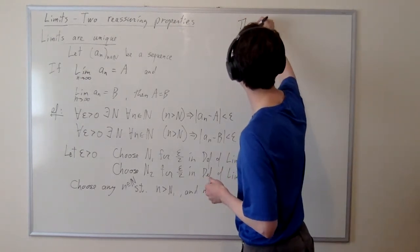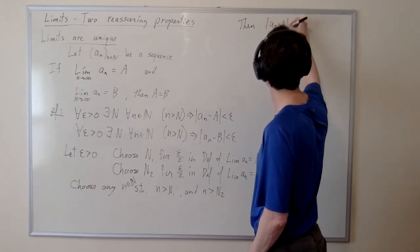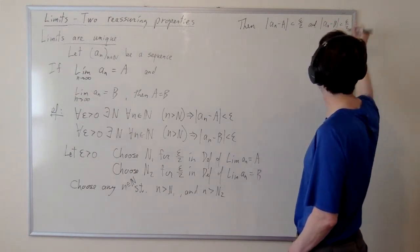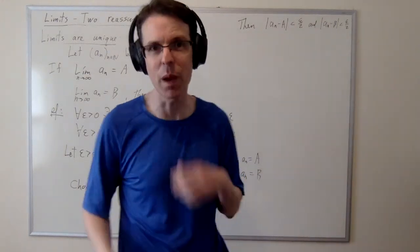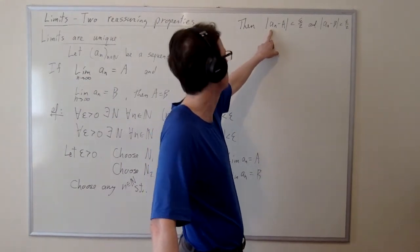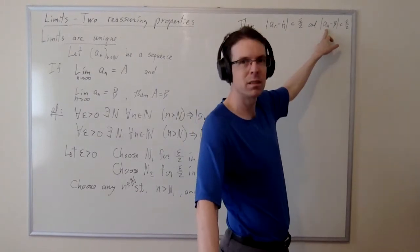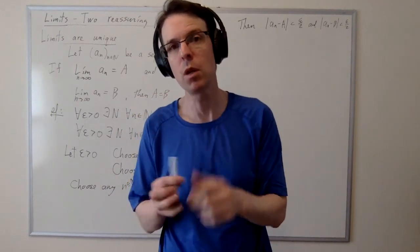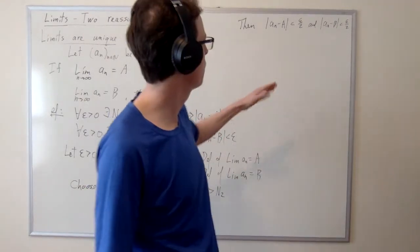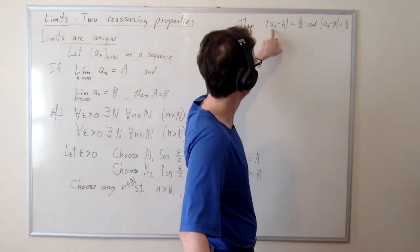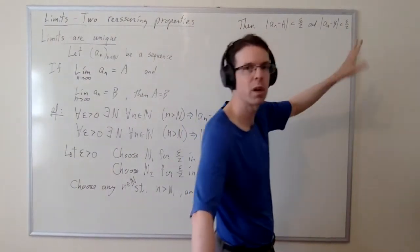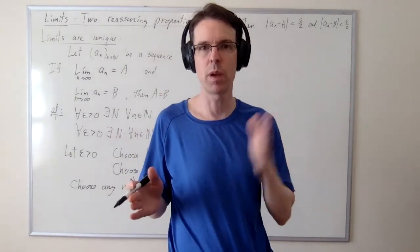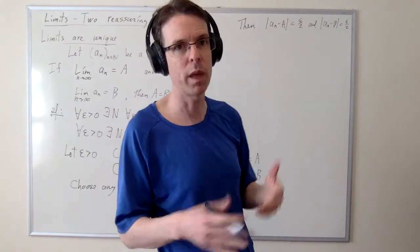So we actually know both of these: |a_n − a| < epsilon/2 and |a_n − b| < epsilon/2. This single sequence term is close to a by no more than epsilon over two, and simultaneously close to b by no more than epsilon over two. We want to conclude that a and b are also close to each other. The right way to do that is to calculate the distance |a − b| and apply the triangle inequality.